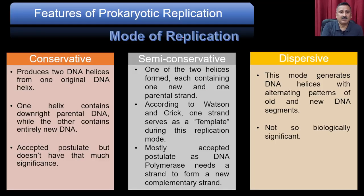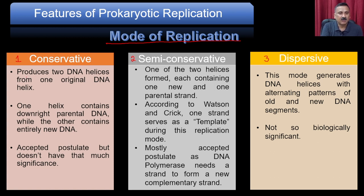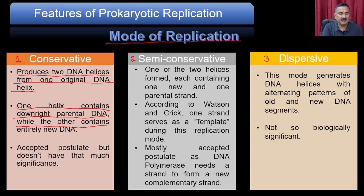There are three different modes proposed for replication. The first is the conservative mode, which proposes that two DNA helices are produced from one original DNA helix — one helix contains the intact parental DNA while the other contains entirely new DNA.